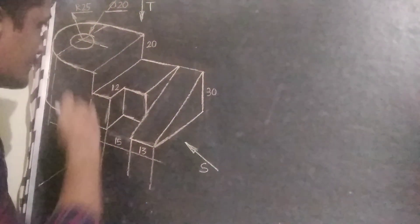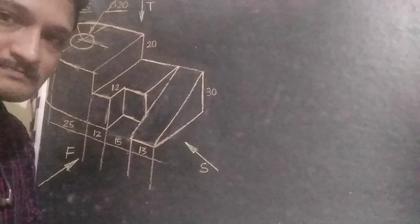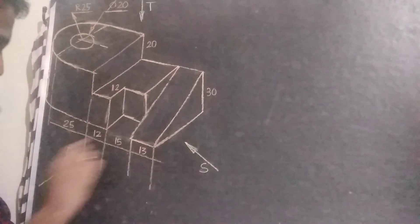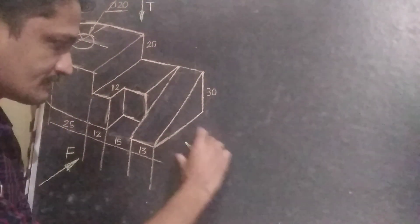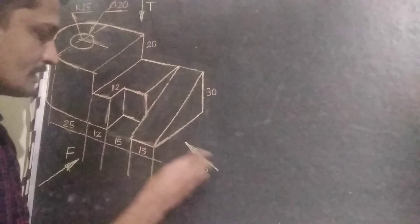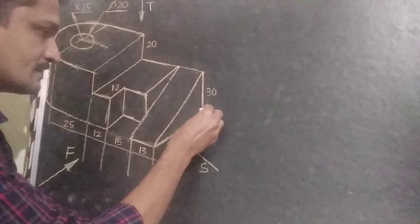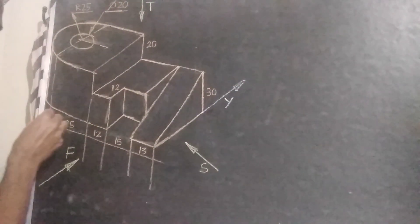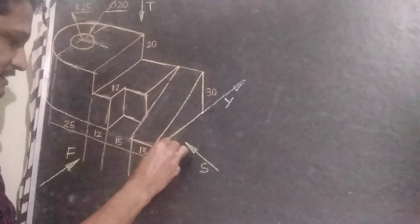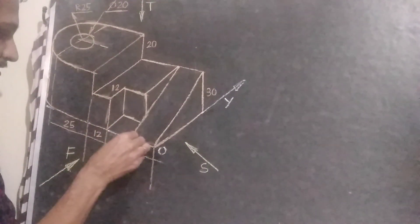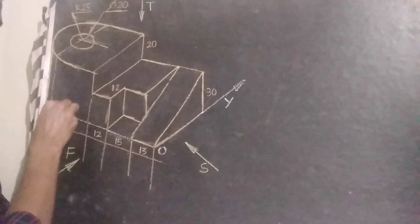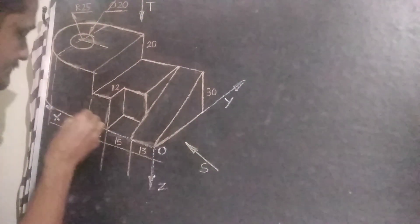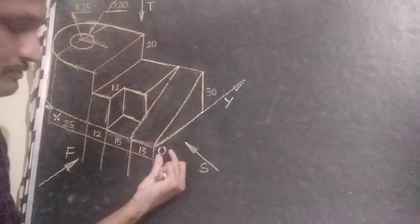Here we have already given one isometric figure. In that figure, this view from this side is represented as front view and view from this side is represented as side view. First we have to represent one isometric coordinate system. This axis represents y axis, this point is origin, this axis is x axis, isometric x axis, and this one will be z axis. This point will become the origin.